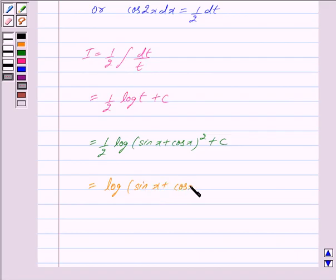Now cancelling out 2 we get this equals log mod sin x plus cos x whole square plus c, and this is same as option b.